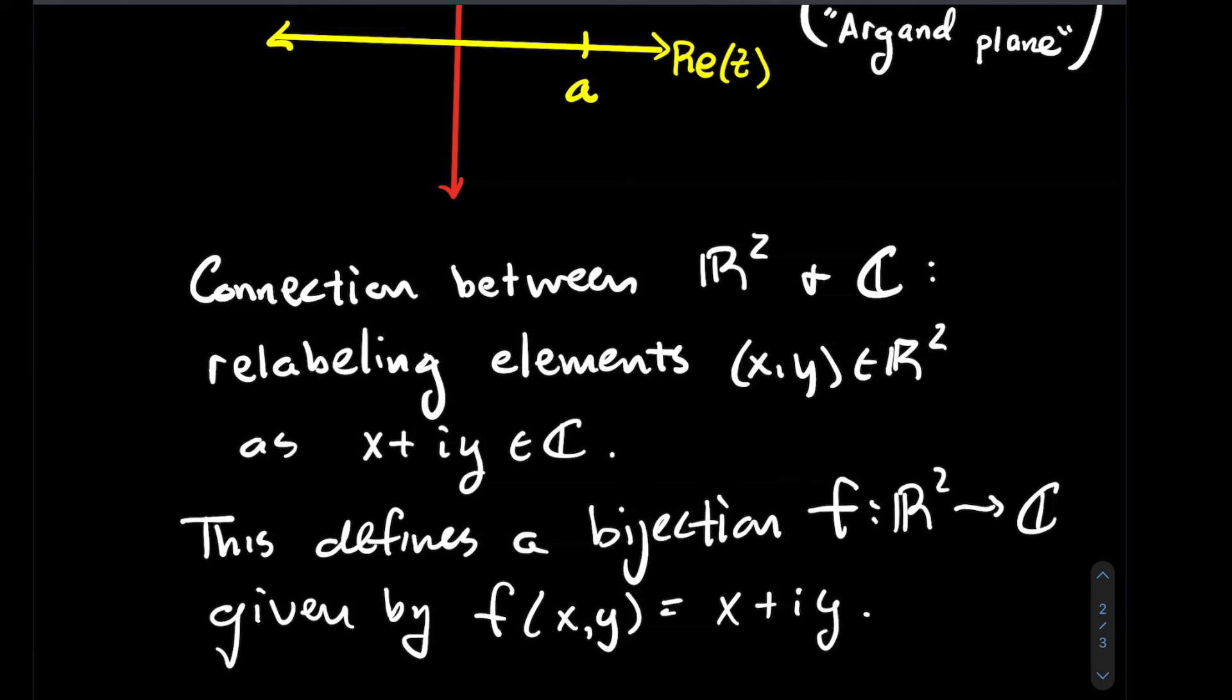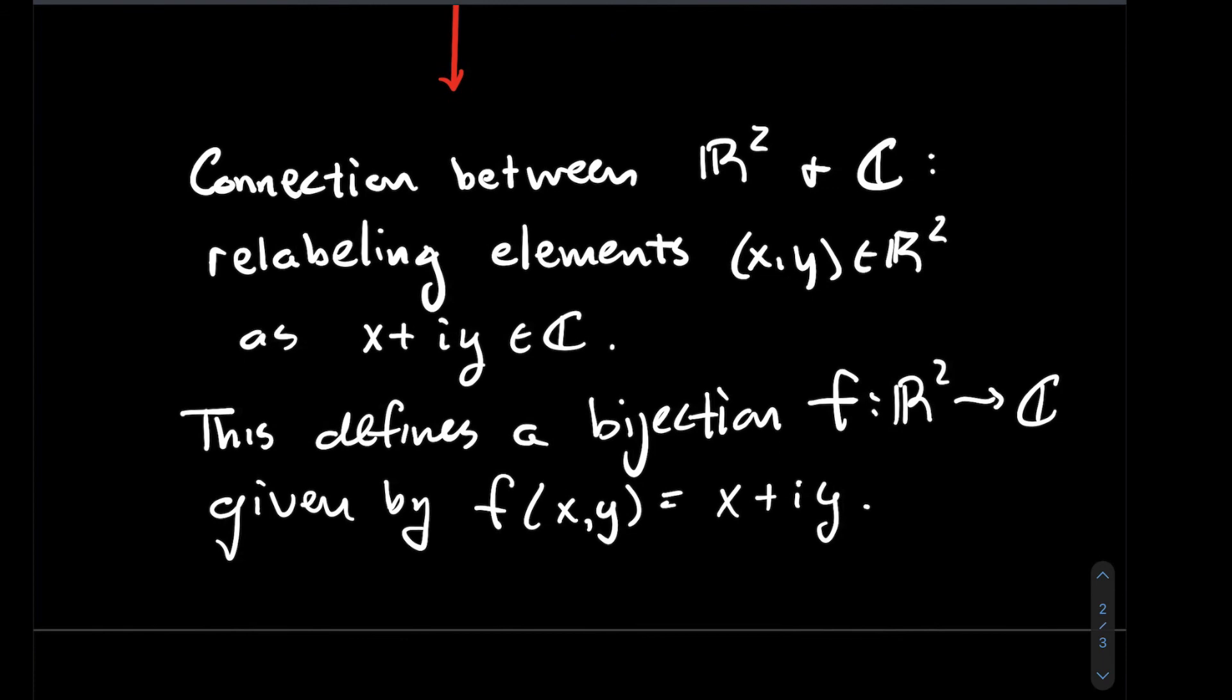There's a bijection from the plane R2 to the complex numbers, and one possible bijection would be to take the point x comma y and send it to its corresponding complex number x plus iy. Remember, bijection means it's one-to-one and onto.